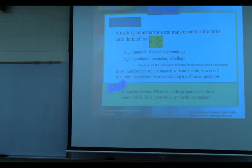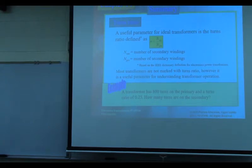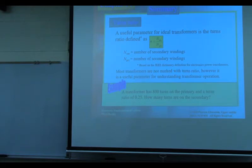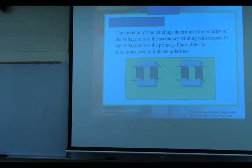Example: a transformer has 800 turns on the primary and the turn ratio is one-quarter. The definition of turn ratio is Ns divided by Np. So Ns over 800 equals one-quarter, meaning Ns equals 200. The secondary has 200 turns.